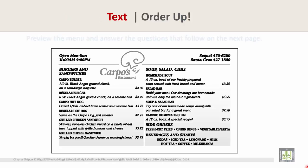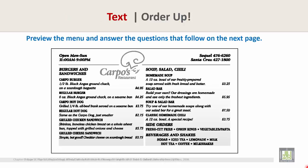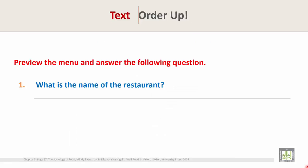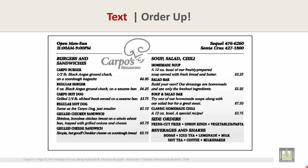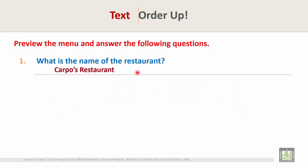Here is the menu. Review the menu and answer the questions that follow on the next page. Question 1: What is the name of the restaurant? Find out the name of the restaurant in this menu. The name is here — Karpos restaurant is the name of this restaurant.